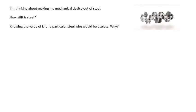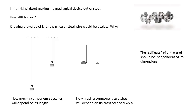Why? Basically because my mechanical component in my engine isn't going to be that steel wire. How much a component stretches will depend on the length of the component — the longer a wire is, the more it will stretch. And how much a component stretches will depend on its cross-sectional area as well — the thinner the wire, the more it will stretch. So K only applies to a particular object; it doesn't apply to a material.